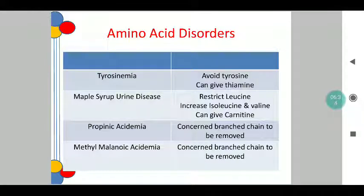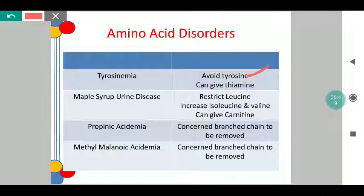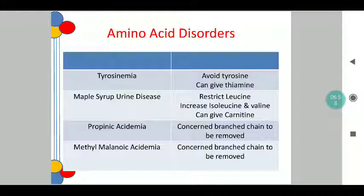Coming to amino acid disorders — touching upon just four. Tyrosinemia: tyrosine accumulates, so you avoid tyrosine-containing foods, and you can give thiamine. The issue is tyrosine is present in pretty much everything, so that becomes a challenge, but it is better to avoid tyrosine as far as possible. For maple syrup urine disease, you should restrict the intake of leucine, increase the amount of isoleucine and valine, and you can give carnitine as a supplement — so carnitine has a role in maple syrup urine disease.